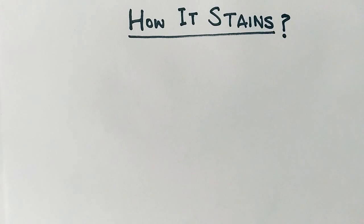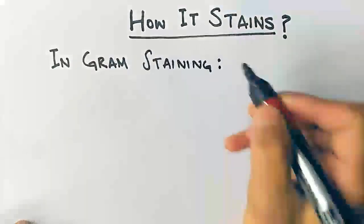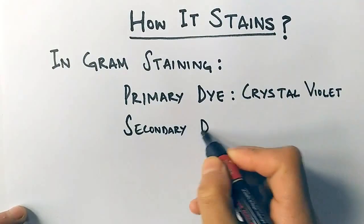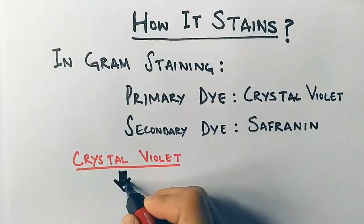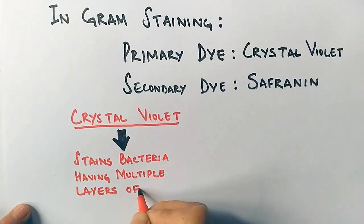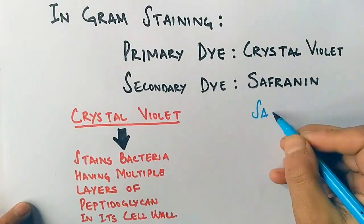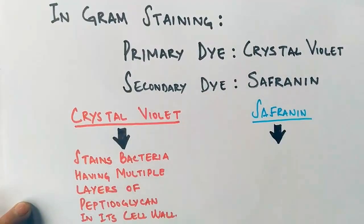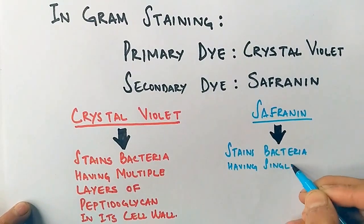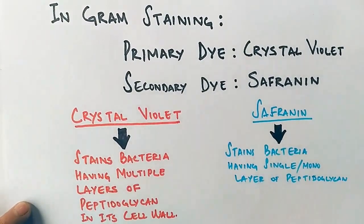In gram staining, we have a primary dye that's crystal violet, and a secondary dye that's safranin. Crystal violet dyes bacteria that have multiple layers of peptidoglycan in the cell wall, while the counter-staining procedure with safranin stains bacteria which have a monolayer or single layer of peptidoglycan in their cell wall.